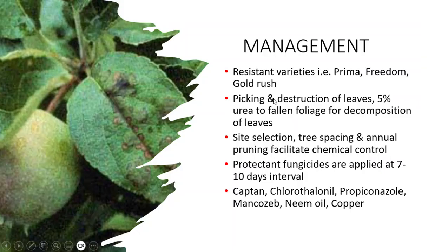For management: there are some resistant varieties — Prima, Freedom, and Gold Rush. Picking and destruction of leaves can be used. For example, 5% urea aids the foliage leaf drop. Site selection, tree spacing, and annual pruning are recommended to facilitate good chemical control. Protectant fungicides should be applied at regular intervals. Fungicides commonly used include chlorothalonil and propiconazole — propiconazole is commonly used in Pakistan — as well as neem oil and copper-based fungicides.